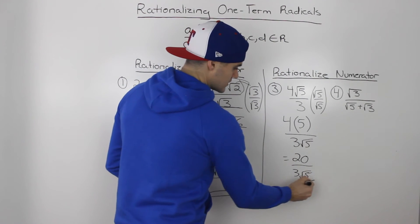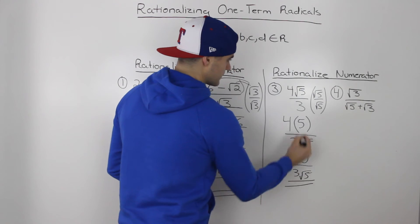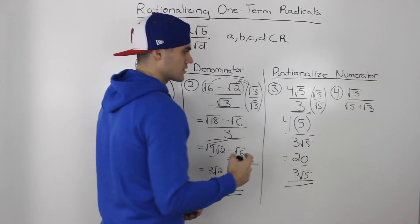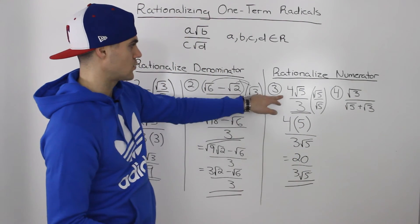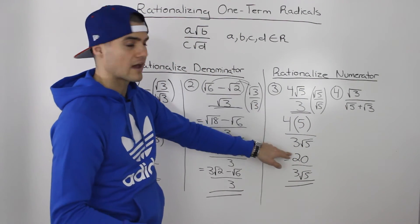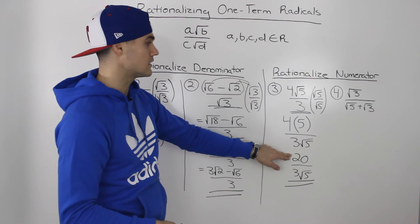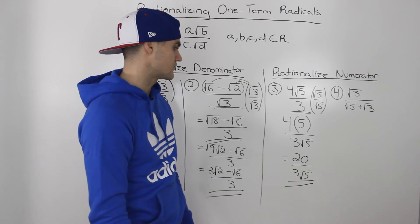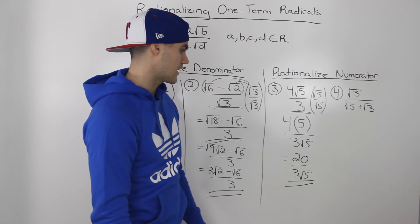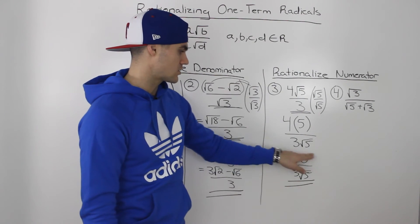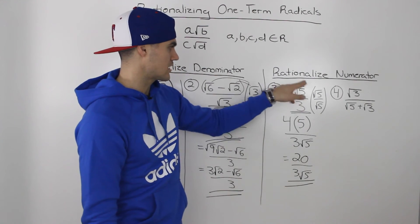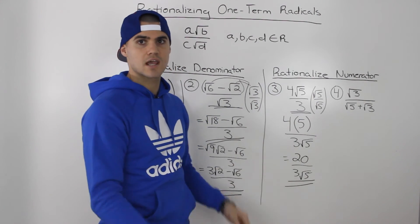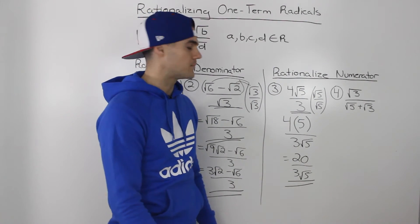This expression and the original expression are equal, but notice how there's no radical left in the numerator — there's only a 20. Check your answer; this expression and the original should give the same decimal amount.